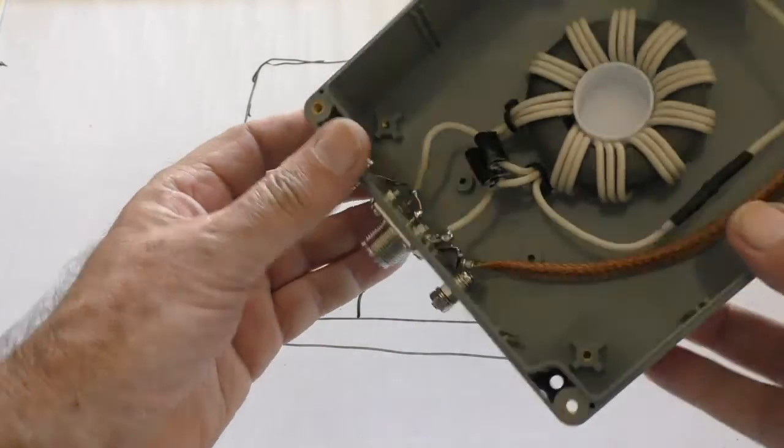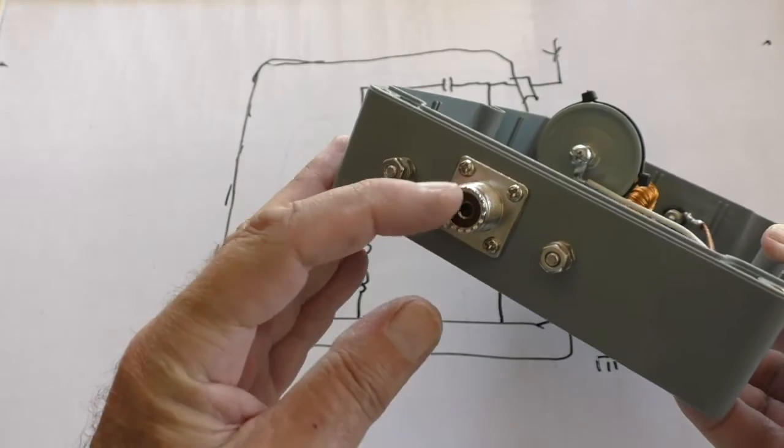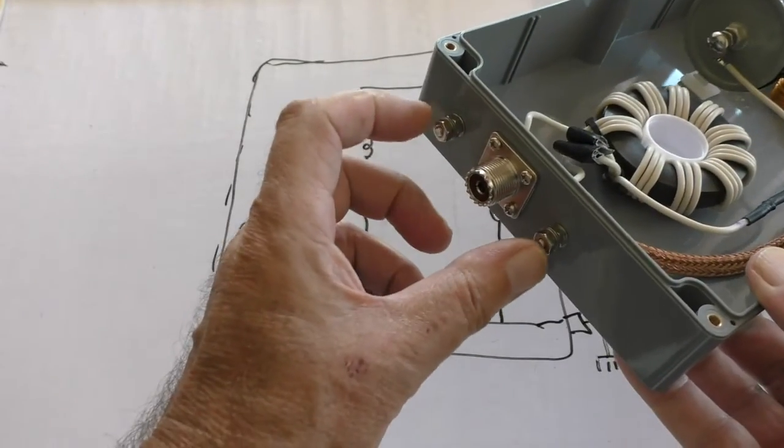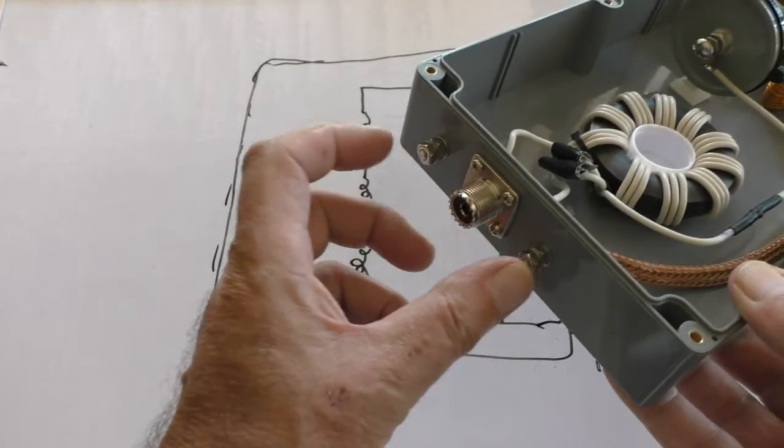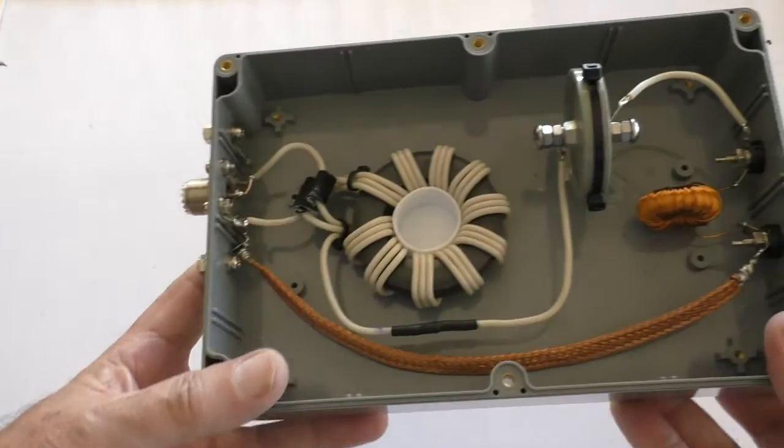So on the inside, this one here goes to the outer, this one here goes to the inner on that SO239. So that the auto ATU can be connected across there. And if it's being fed with coax, the coax connector will just go on there. But that's basically it.